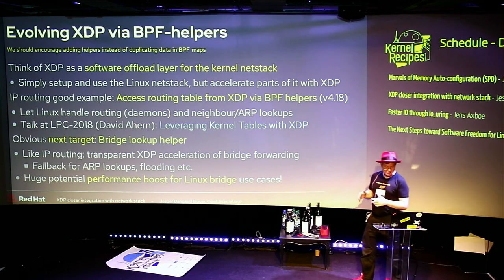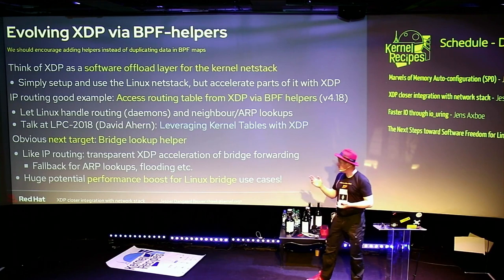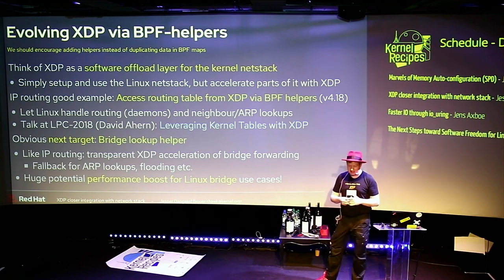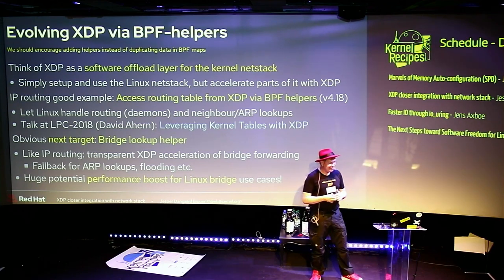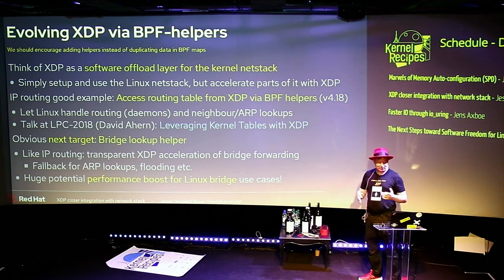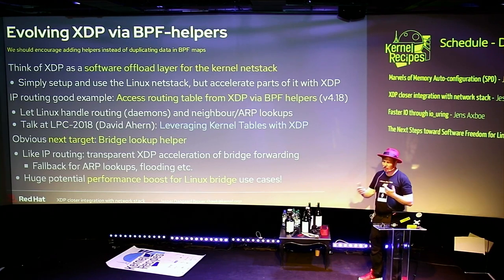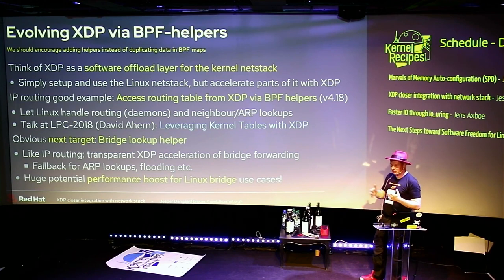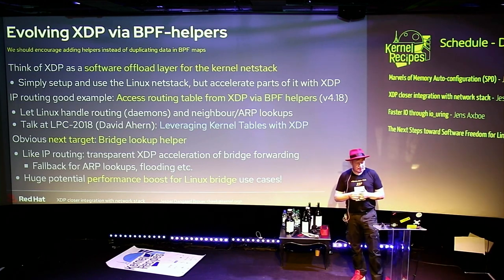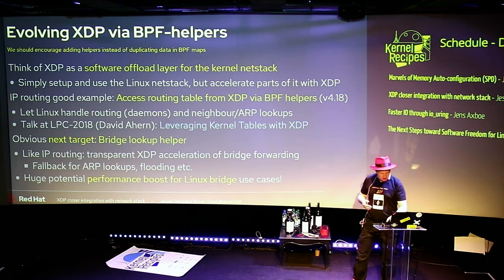One next obvious target is the bridge helper lookup. It's like the routing lookup — we can transparently accelerate some parts of bridge forwarding and then fall back, because we don't have flooding support in XDP yet since we don't have a clone facility. We might want to add that, and it would obviously give a boost to Linux bridging, which is used quite extensively.